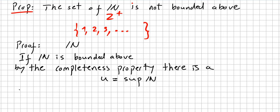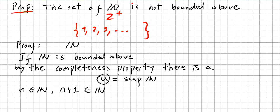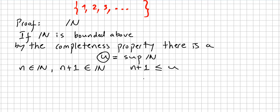But if I pick any element n in the natural numbers, the next number n+1 will also be a natural number. Since the natural numbers are bounded above and have a supremum, n+1 must be smaller than this supremum.